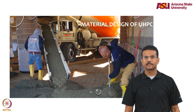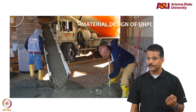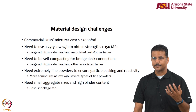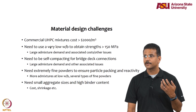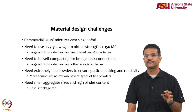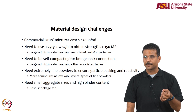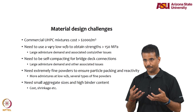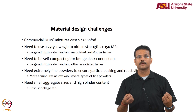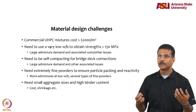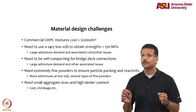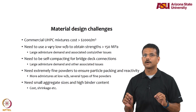Turning to material design: how do you design UHPC for such very high strengths and durability? There are commercial mixtures available for about $2,000 per cubic meter — extremely expensive compared to conventional concrete at about $125 per cubic meter, roughly 15 to 20 times the cost because these materials are proprietary and use special admixtures. The goal is to show that UHPC can be made with locally available raw materials without fancy powders, if you carefully control what you put in and how you make your concrete.